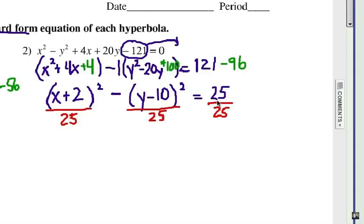And don't forget the last step. We need to divide everything by 25 because we want to have a 1 on the right hand side of that equation. So when I do that, I notice that the center is going to be at negative 2, positive 10. And the a and the b values are both going to be 5. So we'd be able to graph this hyperbola if we needed to.